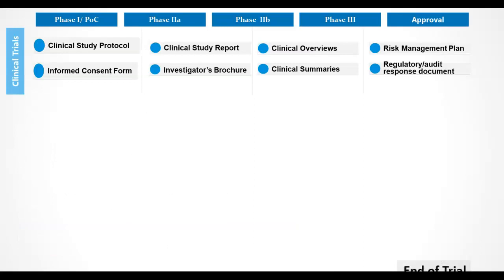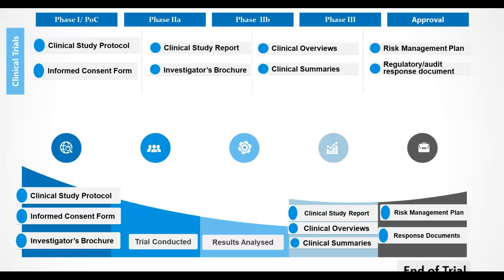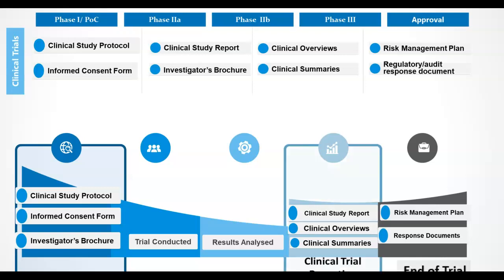Now let's look at the documents required during clinical trials. The documents listed on the screen are essential documents for conducting a clinical trial — all the documents shown are required for every clinical trial a pharmaceutical company conducts. For example, if conducting a phase 1 study, you will have to prepare a clinical study protocol, informed consent form, and investigator's brochure before the study starts. When the study is completed, the results are analyzed and presented in a clinical study report, clinical overviews, and clinical efficacy and safety summaries.